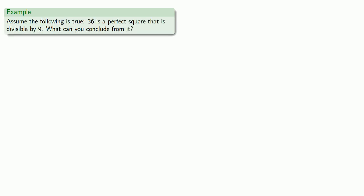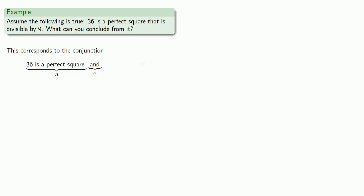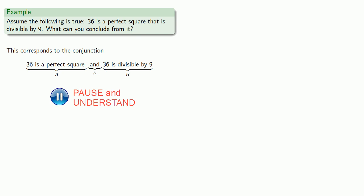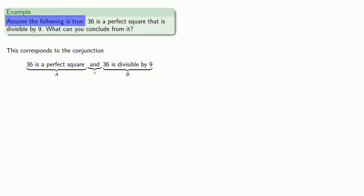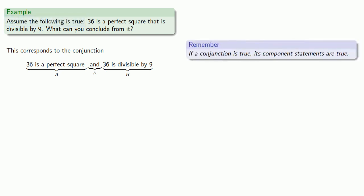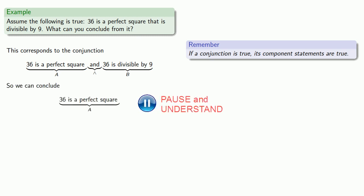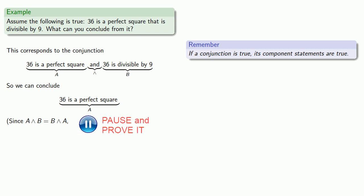For example, let's assume the following is true: 36 is a perfect square that is divisible by 9. This corresponds to the conjunction: 36 is a perfect square and 36 is divisible by 9. Now we're assuming this is true, so if a conjunction is true, its component statements are true. We can conclude: 36 is a perfect square. And since A and B is logically equivalent to B and A, we can also conclude that 36 is divisible by 9.